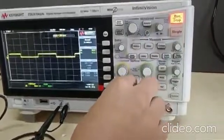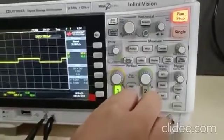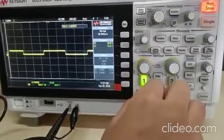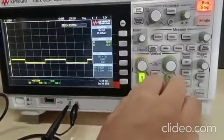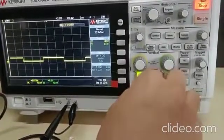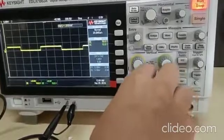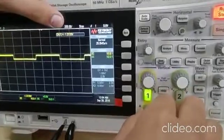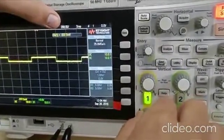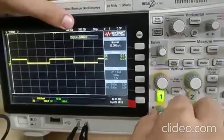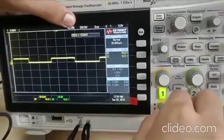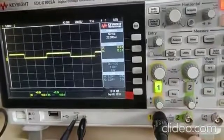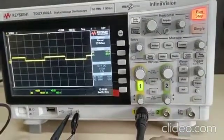This is Y position knob. By moving it anti-clockwise, we move the waveform to negative Y axis. We can see how much is the distance from zero. When channel 1 becomes zero volt, it means that the waveform is perfectly aligned with X axis.